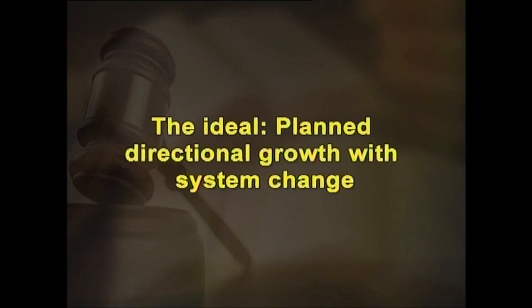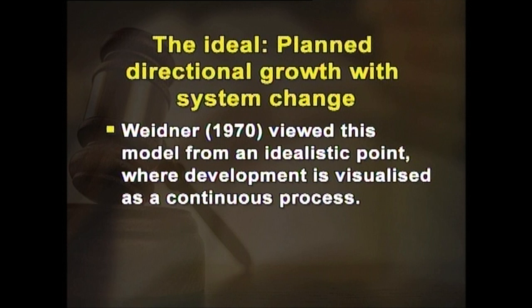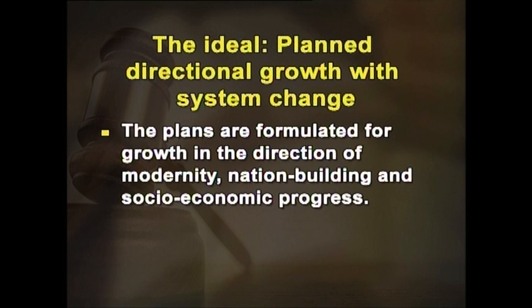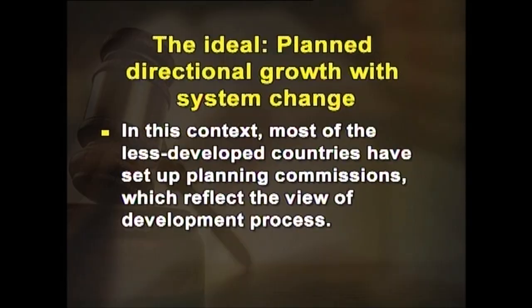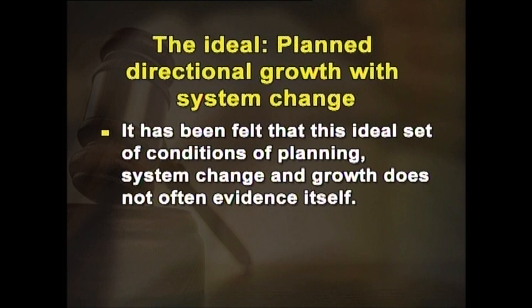Model one: the ideal — planned directional growth with system change (Wiedner, 1970). Wiedner viewed this model from an idealistic point where development is visualized as a continuous process. Plans are formulated for growth in the direction of modernity, nation building, and socio-economic progress. Programs are worked up and implemented with system change. Differentiation and coordination are brought about to ensure goal accomplishment. Most less developed countries have set up planning commissions reflecting this view of the development process.